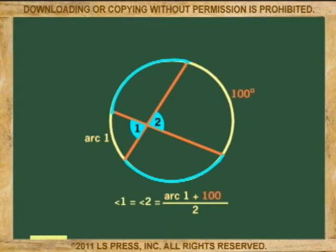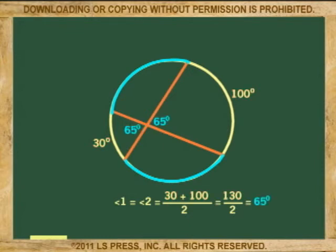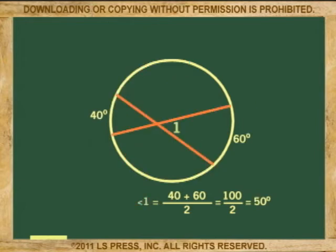For example, if this arc is 100, and this arc is 30, then the internal angles are 100 plus 30, or 130 divided by 2 is 65 degrees. And this angle made by these two chords is 40 plus 60 equals 100, divided by 2 is 50 degrees.